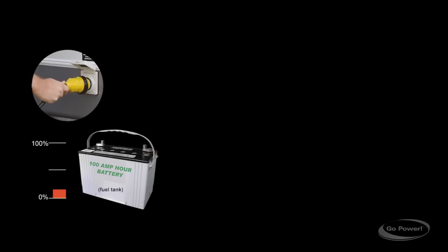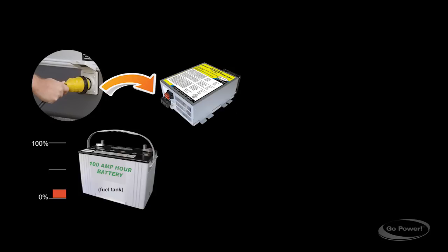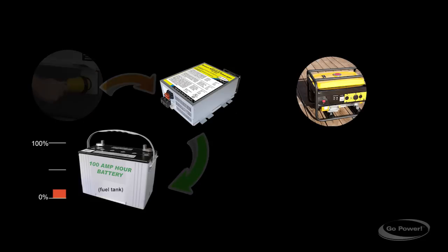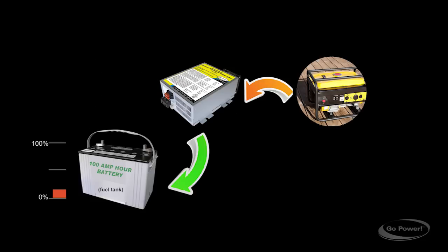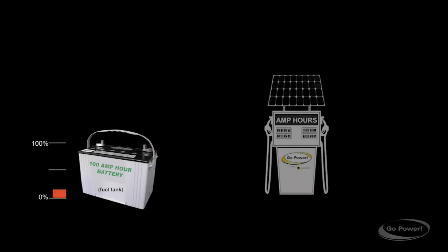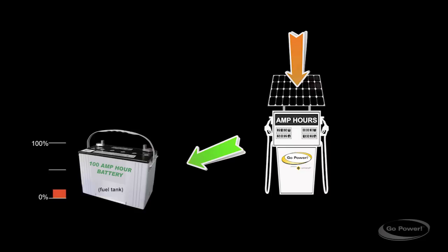Now we're going to put these amp hours back in in a few different ways. In an RV you're either going to plug in to shore power where we have the converter charger start filling amp hours back into our batteries. We also could have a generator, we could turn that on, and through the same process the converter charger would come on and start putting amp hours back into the battery. Or you could have solar, and solar, anytime it's light out, will return these amp hours back into your gas tank.